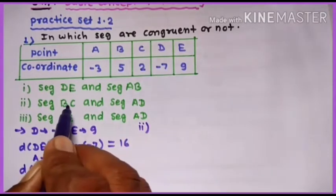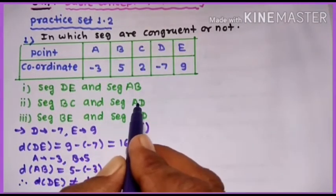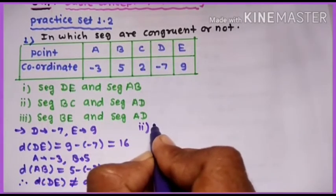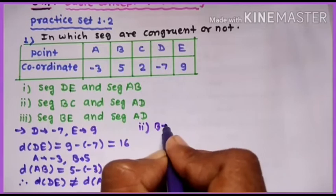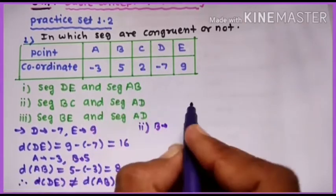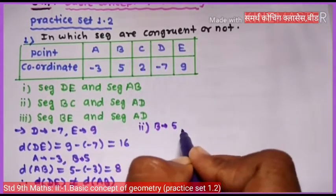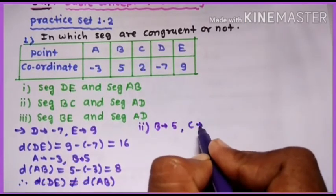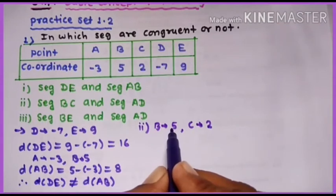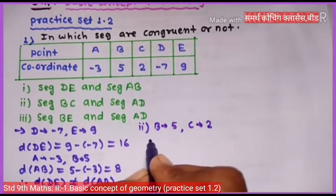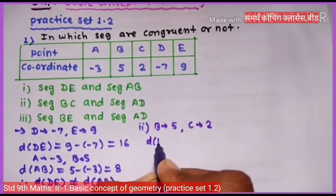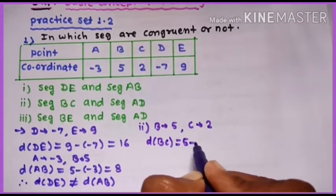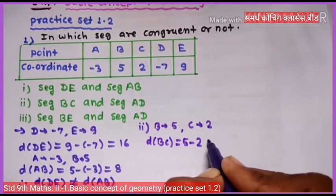Second part: segment BC and segment AD congruent आहेत किंवा नाहीत ते determine करायचे आहे. B चा coordinate 5 आणि C चा coordinate 2 आहे. 5 is greater than 2, so distance BC = 5 minus 2 = 3.